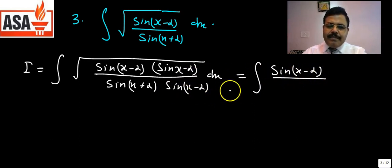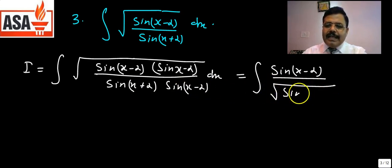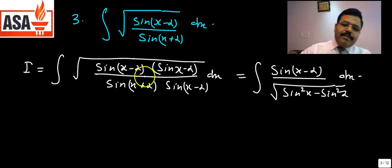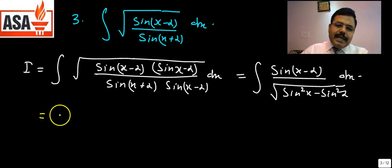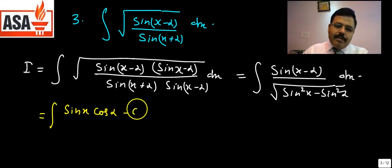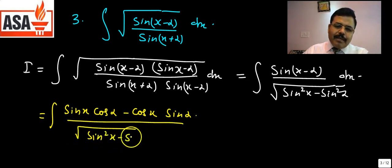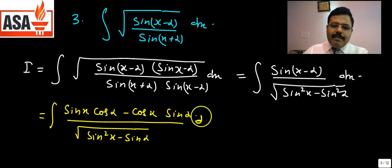To handle this, multiply numerator and denominator inside the root by sin(x − α). Then sin(x − α)² appears in the numerator, so sin(x − α) comes outside the root. In the denominator we get sin(x + α)·sin(x − α) = sin²x − sin²α, using the identity sin(A+B)·sin(A−B) = sin²A − sin²B. So we get sin(x − α) / √(sin²x − sin²α) dx.